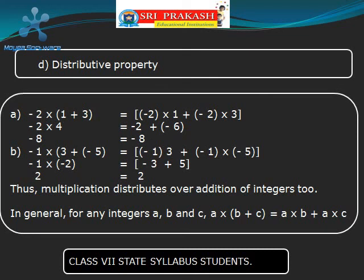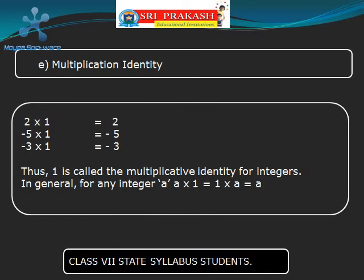Now let us find the Multiplicative Identity for integers. 2 into 1 is 2; minus 5 into 1 is minus 5; minus 3 into 1 is minus 3. Thus 1 is called the multiplicative identity for integers. In general, for any integer A, A into 1 is equal to 1 into A is equal to A.